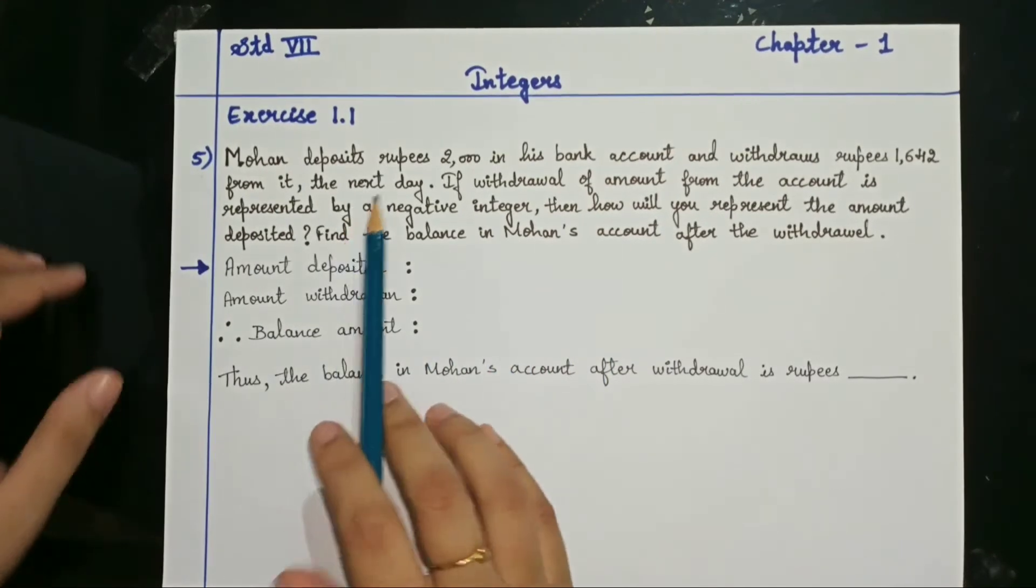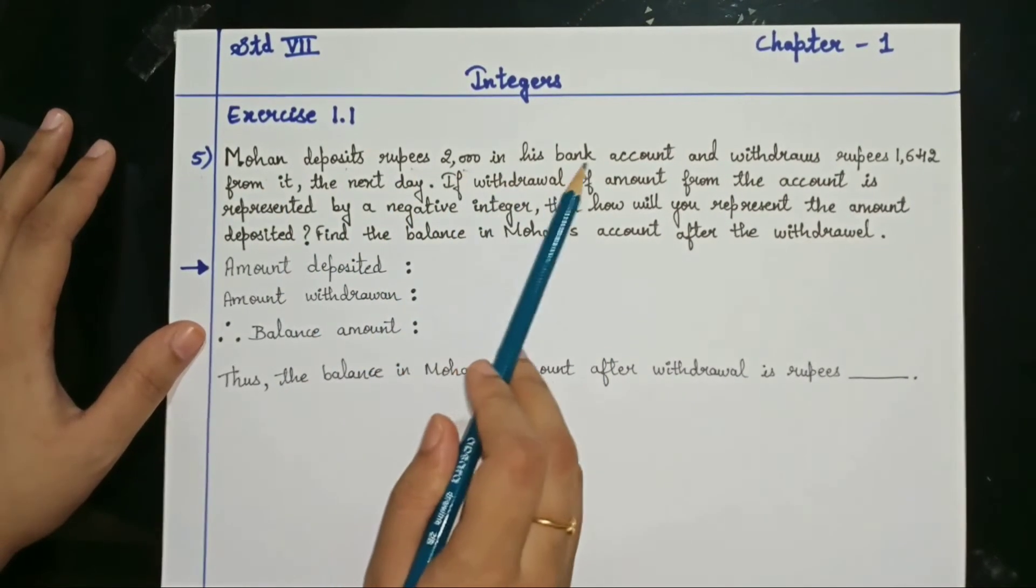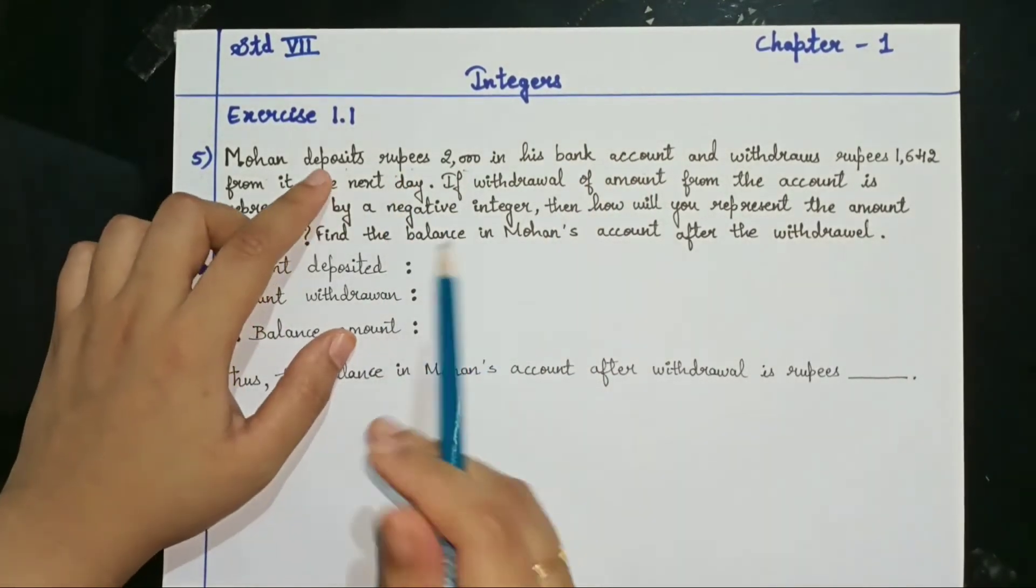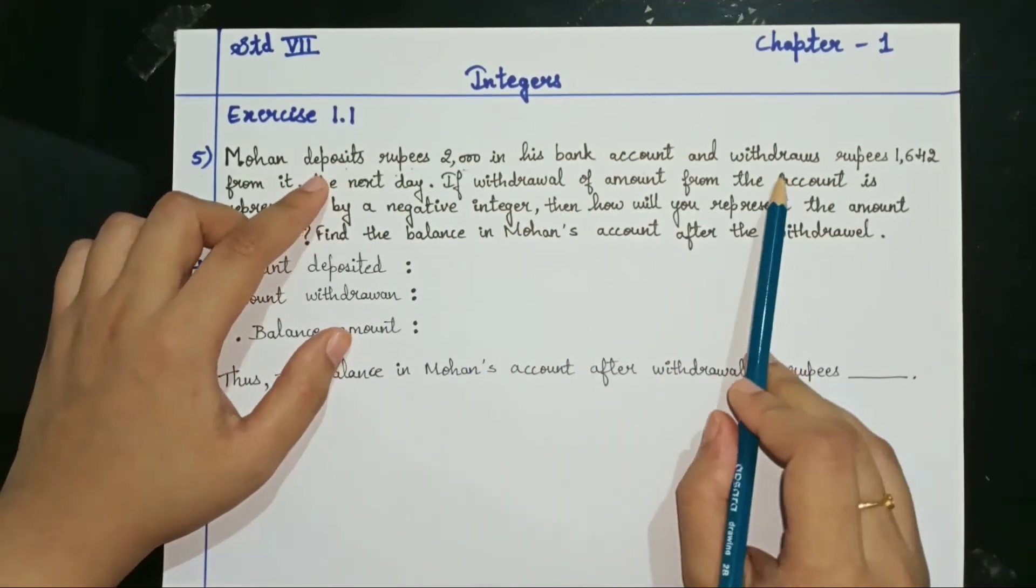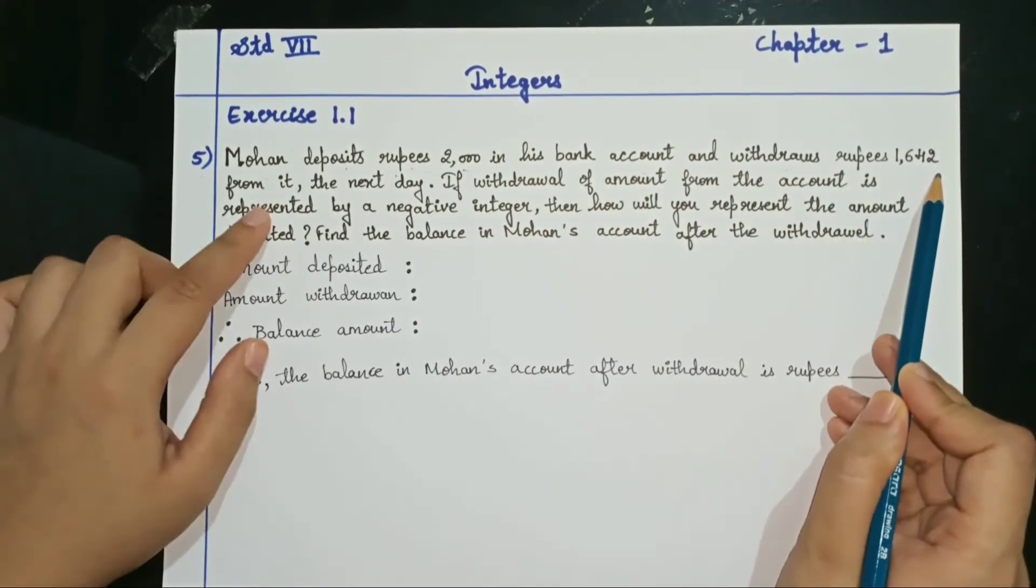Okay, let's see what the question is telling. Mohan deposits rupees 2000 in his bank account. He deposits, deposits means he is putting it.